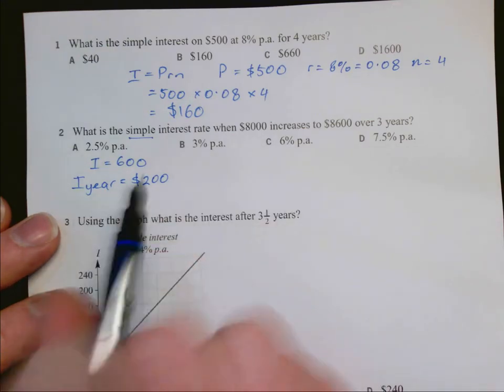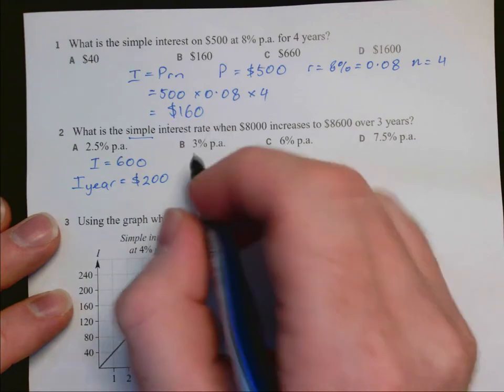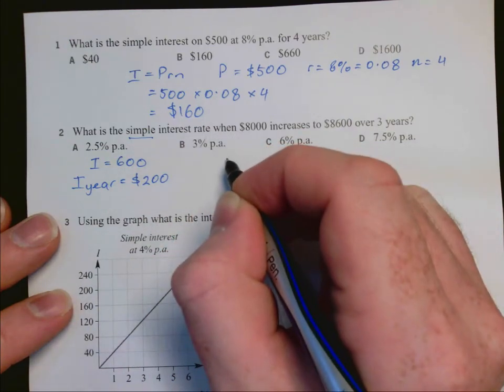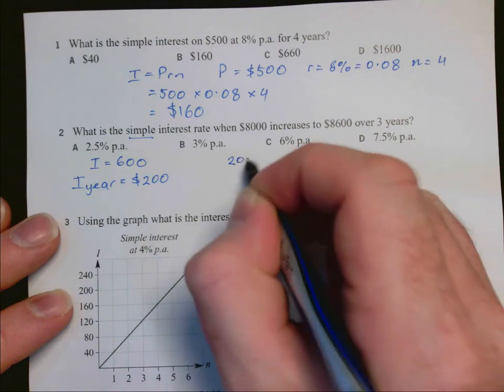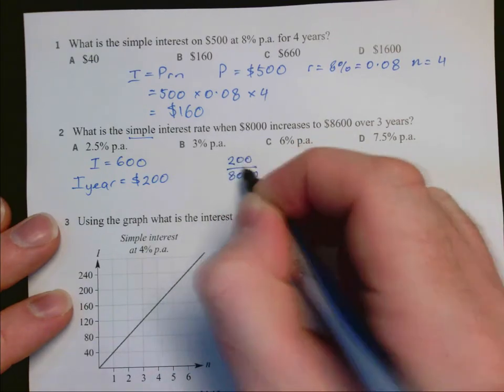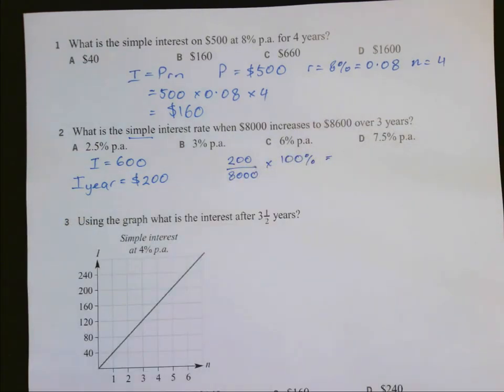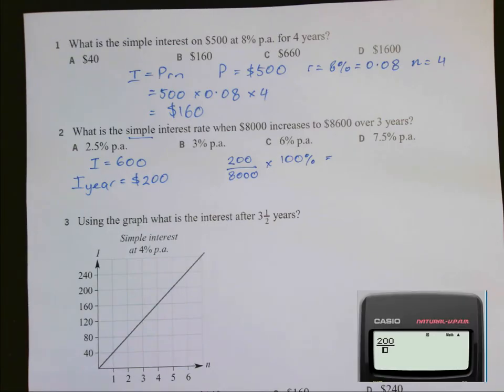So I want to know what interest rate gave me $200 when I invested $8,000. We can work that out by finding a percentage of these two amounts. So 200 out of 800 times 100% will give us a calculator answer, and the calculator gave us 5 on 2.